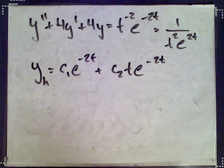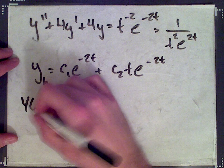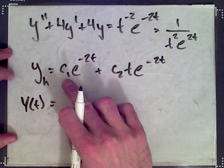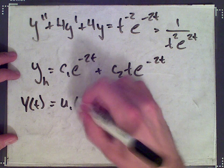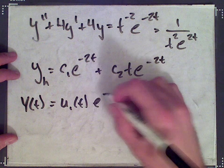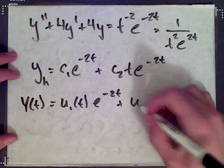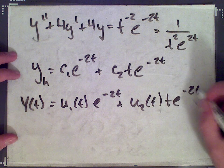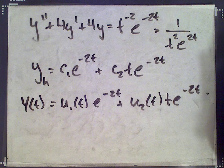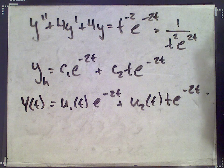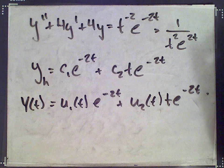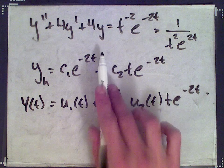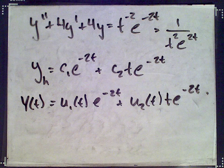For variation of parameters, we assume we have a particular solution of this form. Instead of the constants c1 and c2, we put unknown functions of t — u1 and u2. What we're going to do is differentiate this twice, plug everything into our differential equation, and then solve for u1 and u2.